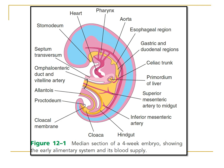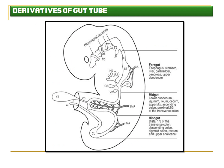There are three different arteries supplying the three different parts of the gut. The foregut below the septum transversum is supplied by the celiac trunk. The foregut above the septum transversum is supplied by four or five definite branches arising directly from the aorta. The midgut is supplied by the superior mesenteric artery, and the hindgut is supplied by the inferior mesenteric artery.